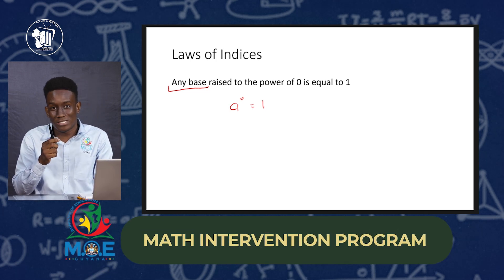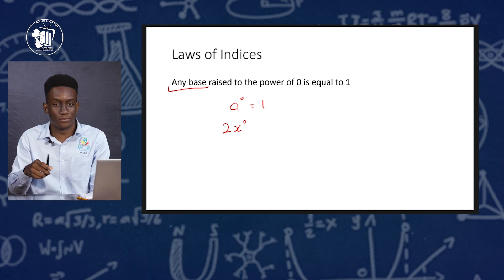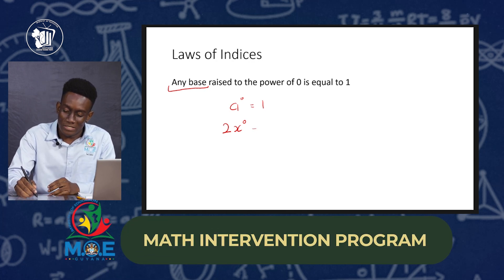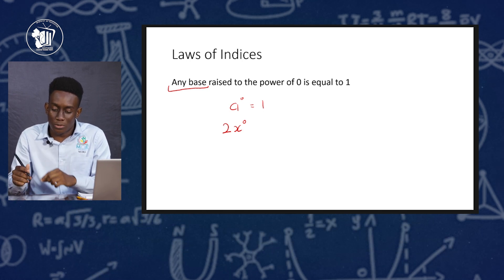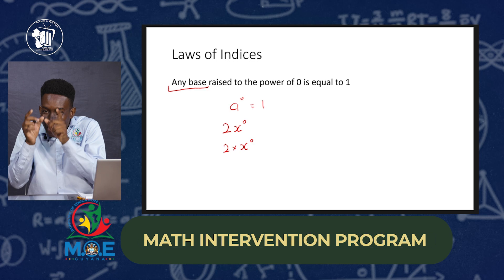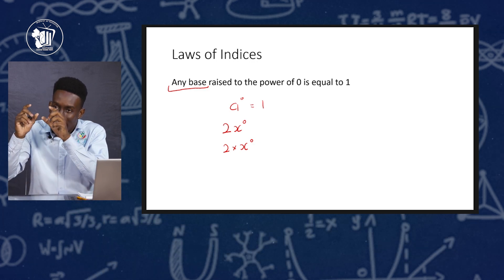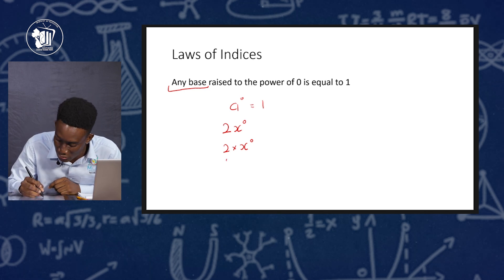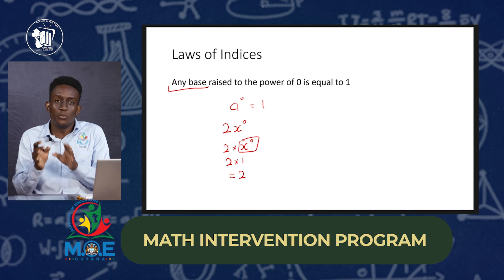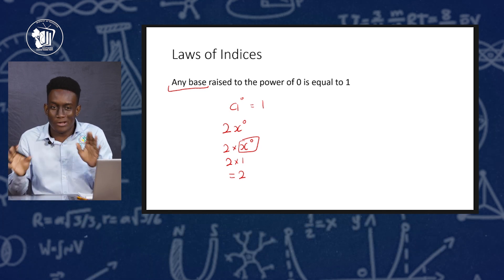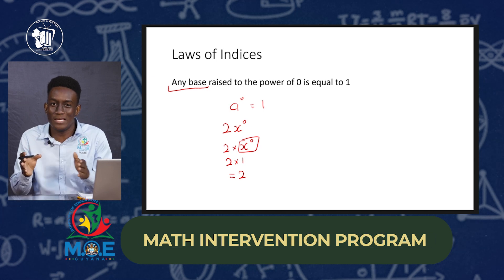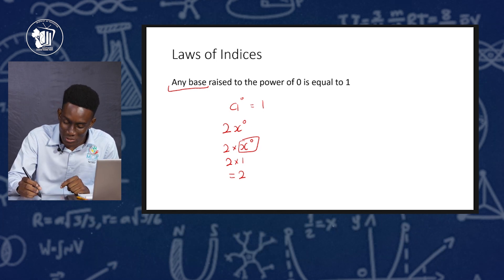We have to be careful with this law. Take the example 2x raised to the power of 0. Many people might rush and say the answer is 1 — but no. You must ask: what is actually being raised to the power of 0? Here, 2x means 2 multiplied by x, so it is x that is raised to the power of 0, not the entire 2x. So x equals 1, giving 2 times 1 equals 2. The answer is 2, not 1.